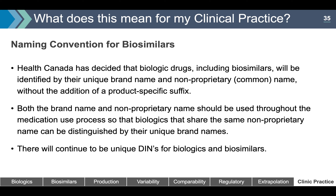How did Health Canada decide to identify biologic and biosimilar drugs? Health Canada decided that biologic drugs, including biosimilars, will be identified by their unique brand name and non-proprietary common name, without the addition of a product-specific suffix. Both the brand name and non-proprietary name should be used throughout the medication use process, so biologics sharing the same non-proprietary name can be distinguished by their unique brands. There will continue to be unique DINs for biologics and biosimilars. The naming policy is part of the mandate of the Pan-Canadian Oncology Biosimilars Initiative's Clinical Operations Working Group.